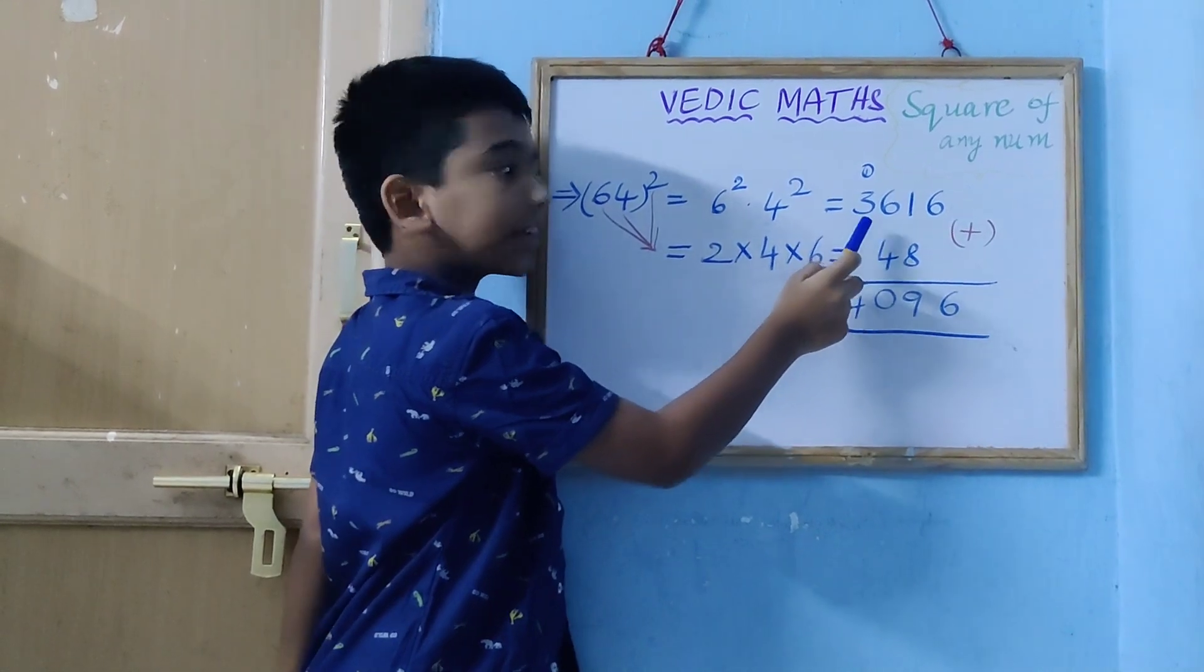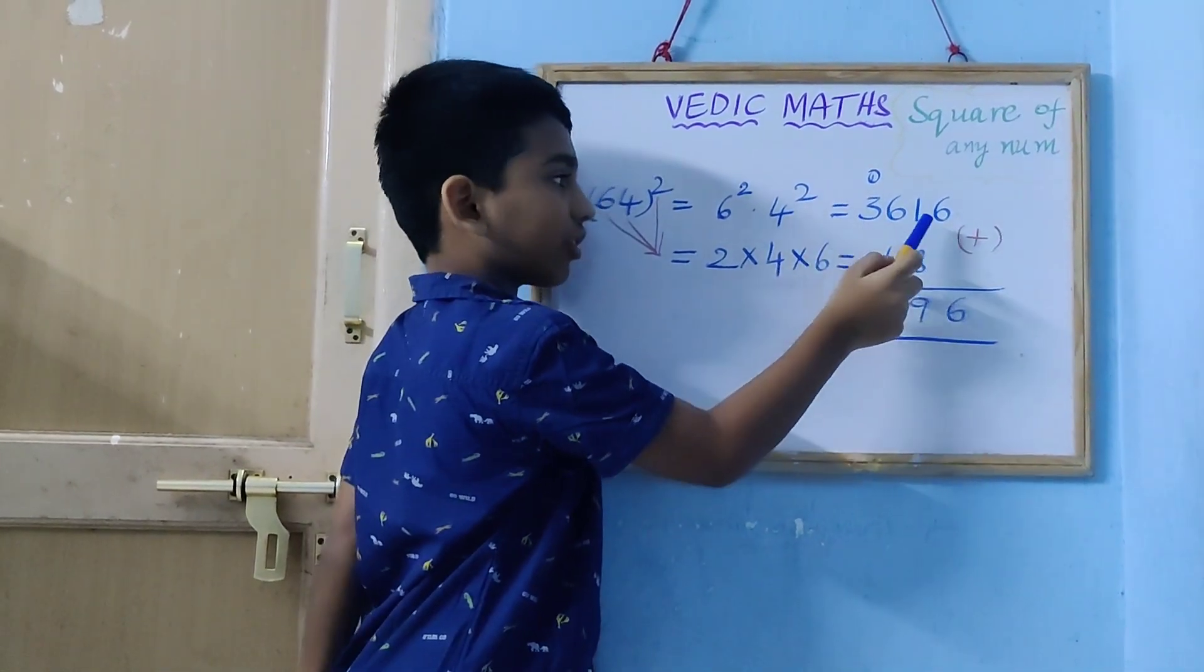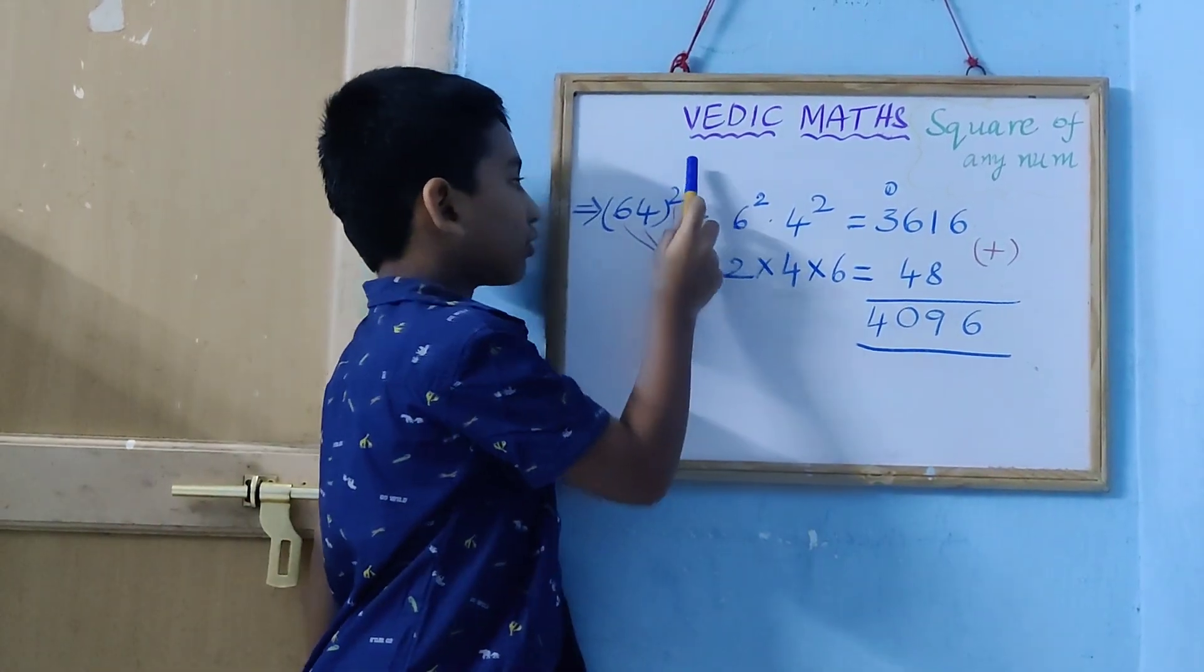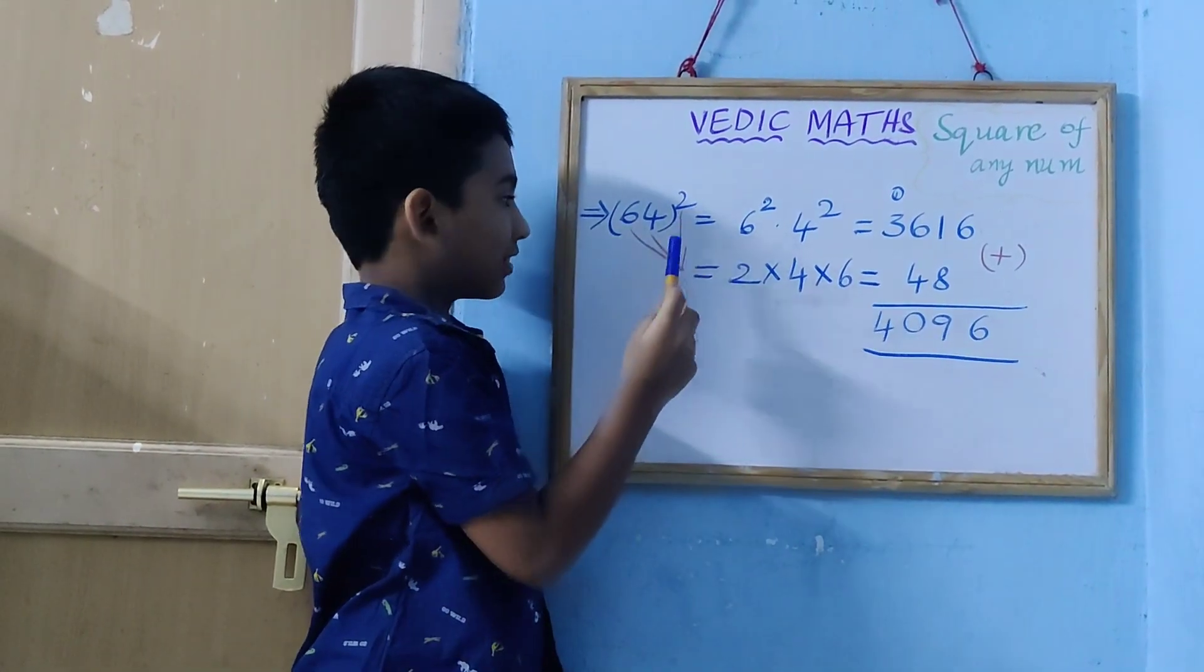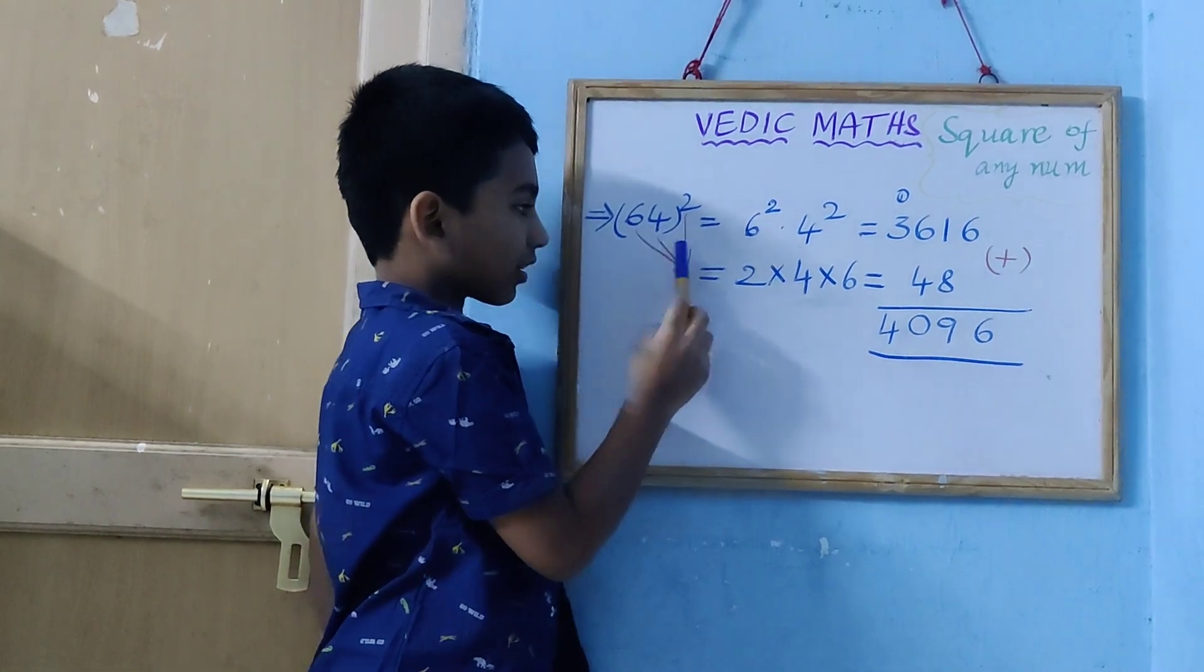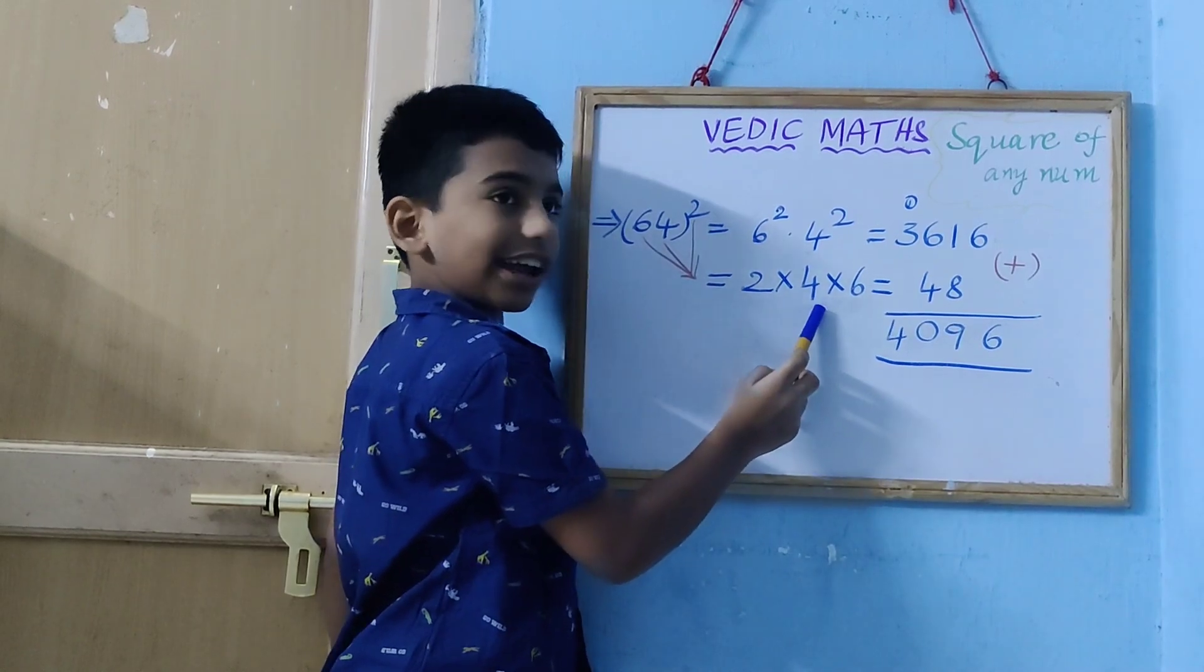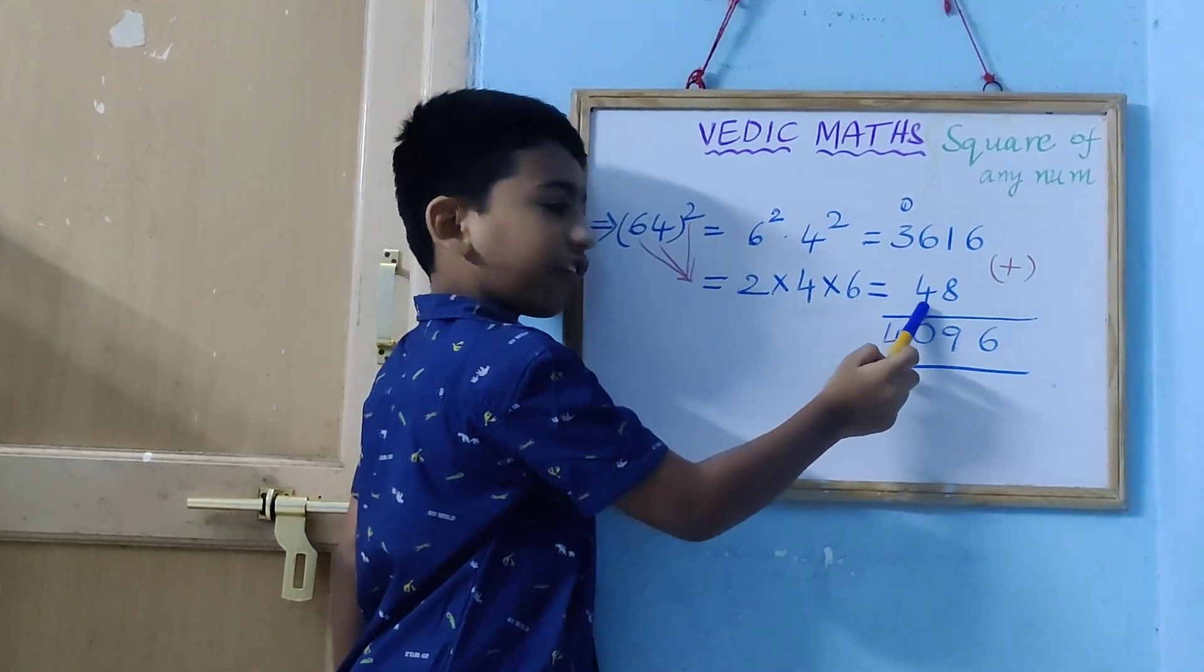6 times 6 are 36, 4 times 4 are 16. Next, we have to multiply all these numbers. 6 times 2 into 4 into 6, 2 times 4 are 8, 8 times 6 are 48.